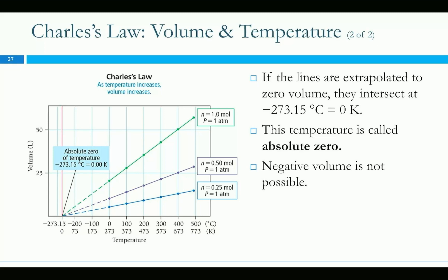That's what the Kelvin scale is based on. A change of one Kelvin is the same as a change of one degree C. But degree C starts with zero at the freezing point of water. Kelvin says zero is absolute zero. So it's this absolute temperature scale that we can use to compare volume changes in gases according to temperature changes.